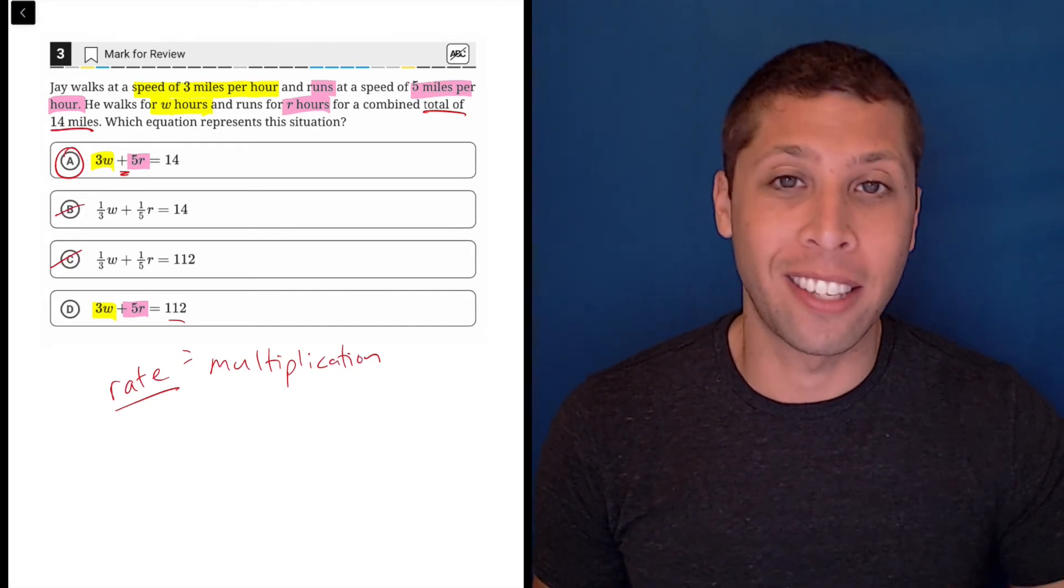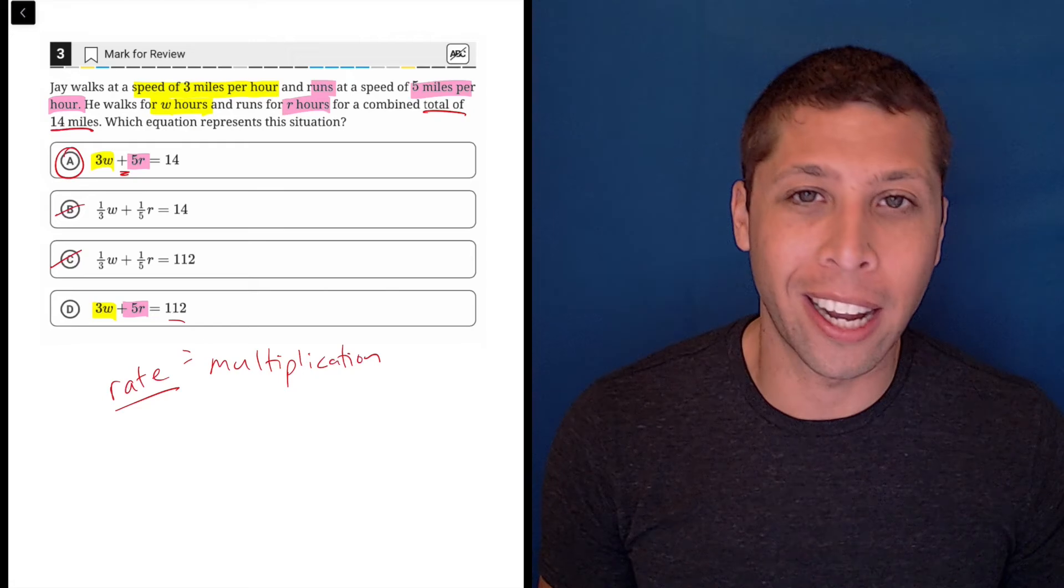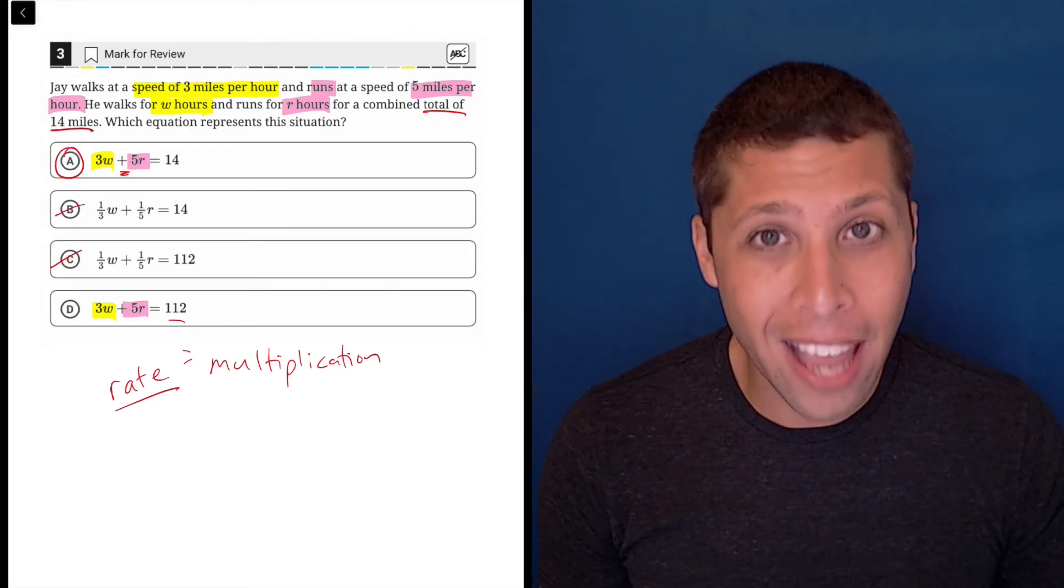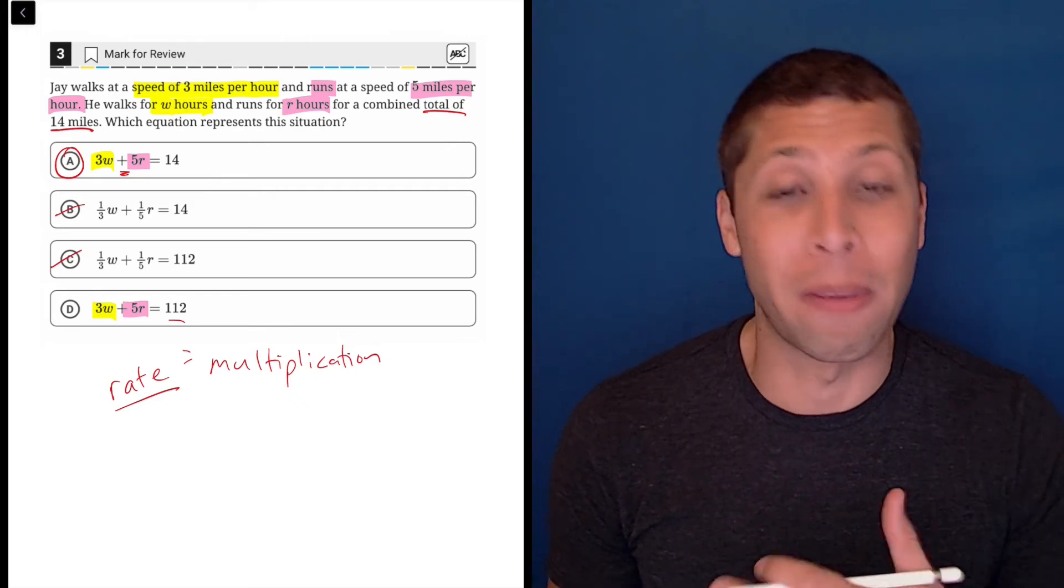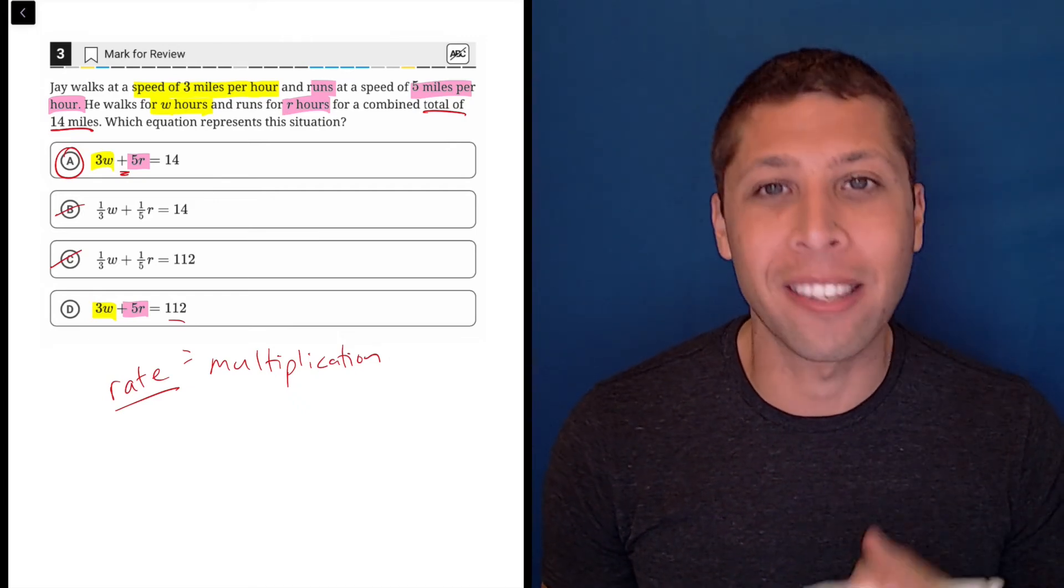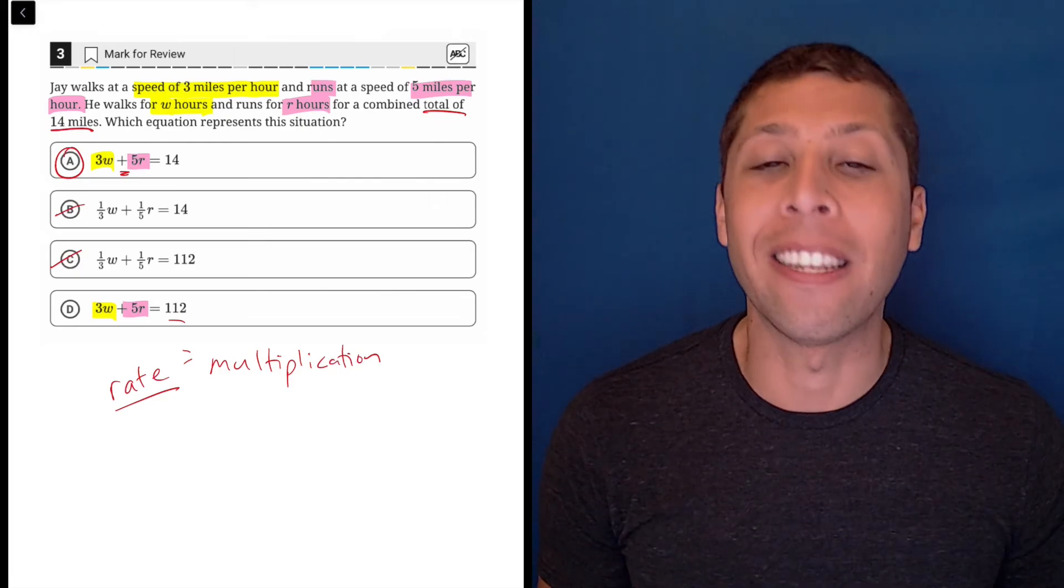The questions on the SAT are generally organized from easy to hard. So those first few questions, it's okay if they feel very easy. It doesn't mean you're falling for a trap. You just need to know some basic facts in this case about rates and multiplication and it's pretty easy to come up with the equation.